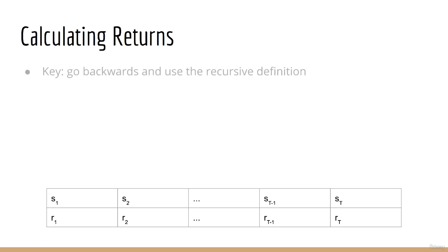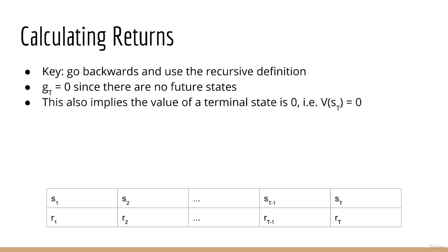Well, it's helpful to actually go backwards. For example, g of big T is zero. Importantly, note that the return is only the sum of future rewards. Since a terminal state is the end of an episode, that means there are no future states. No future states means no future rewards. Therefore, the return of a terminal state is always zero, and hence the value of a terminal state is also always zero.